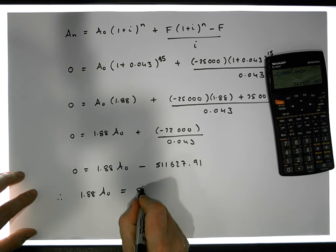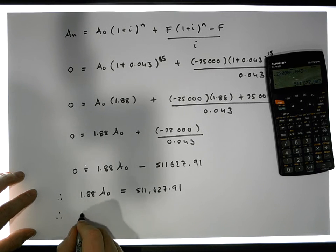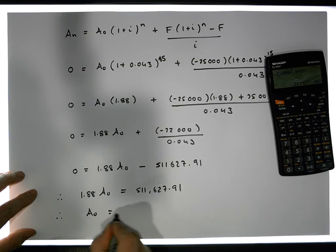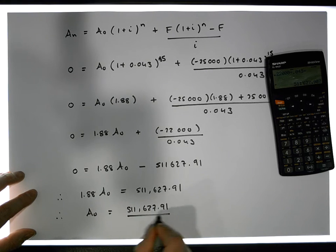Therefore we have A0 must be equal to 511,627.91 divided by 1.88.